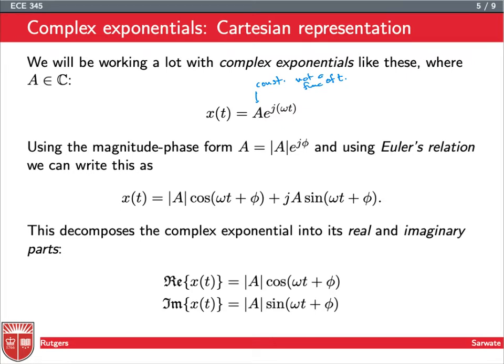So if you use the magnitude phase form, we can decompose this complex number a into its magnitude and phase, and then we can just multiply those in here and substitute, and we get e to the j omega t plus phi. So when we ask for the real and imaginary parts, we get a cosine term and a sine term corresponding to this complex exponential term, and so we get this sort of real and imaginary decomposition.